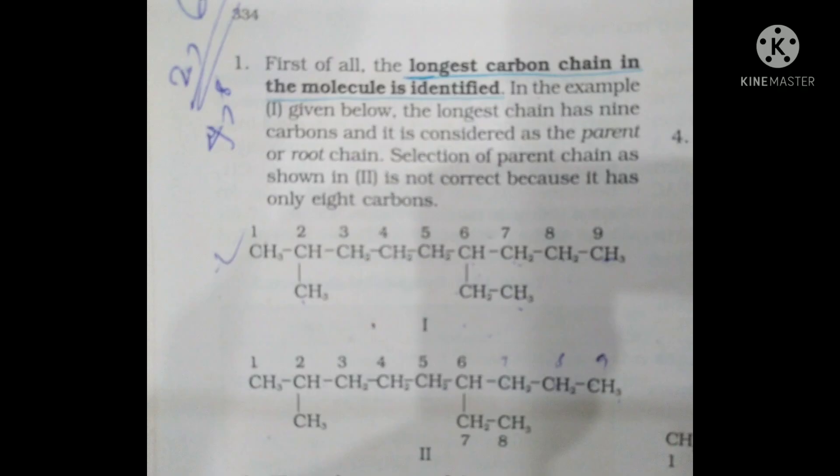We will now discuss the nomenclature of branched chain alkanes using seven rules. Rule 1: The longest carbon chain in the molecule is identified.